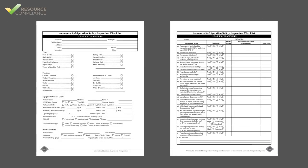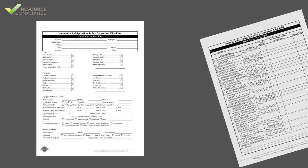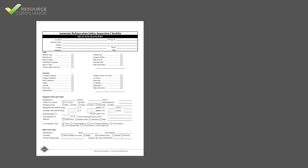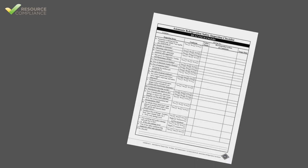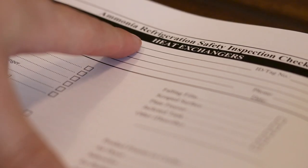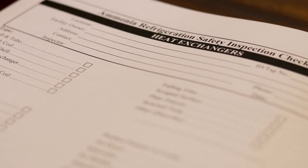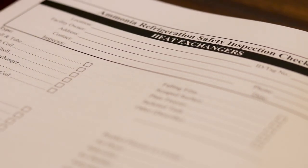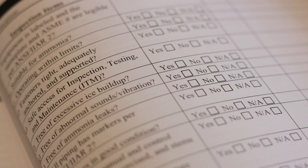The checklists are typically two pages. The first page contains contact and equipment information, and the second page has the inspection checklist. While all the information on the second page will change year to year with the equipment inspection, much of the information on the first page should stay the same. For this reason, you may only have to fill out the first page for each piece of equipment once. For subsequent years, you should only have to fill out the second page.